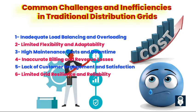Six: Limited grid resilience and reliability. Traditional grids may face challenges in quickly identifying and isolating faults, leading to prolonged outages and reduced grid reliability. Without advanced monitoring and control capabilities, the grid's resilience to external disturbances is compromised.